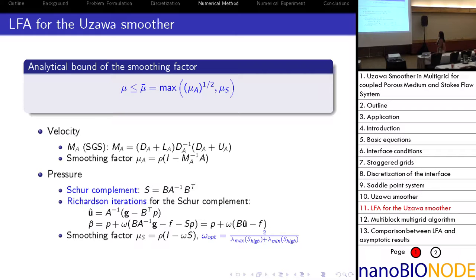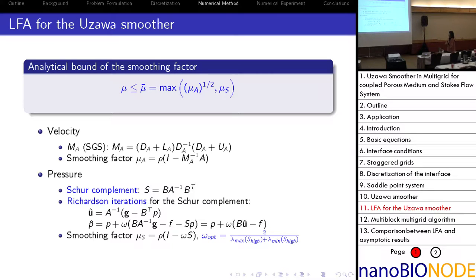In our case, the suitable smoother MA is the symmetric Gauss-Seidel method, which contains one forward and one backward sweep for all velocities in the computational domain. For the pressure, our system can be transformed using the Schur complement. For velocity, it comes from the first equation, and for pressure, a simple Richardson iteration is applied. The smoothing factor mu_S for pressure is related to the relaxation parameter omega, and the optimal relaxation parameter depends on the maximum and minimum eigenvalues of the Schur complement over high frequencies.